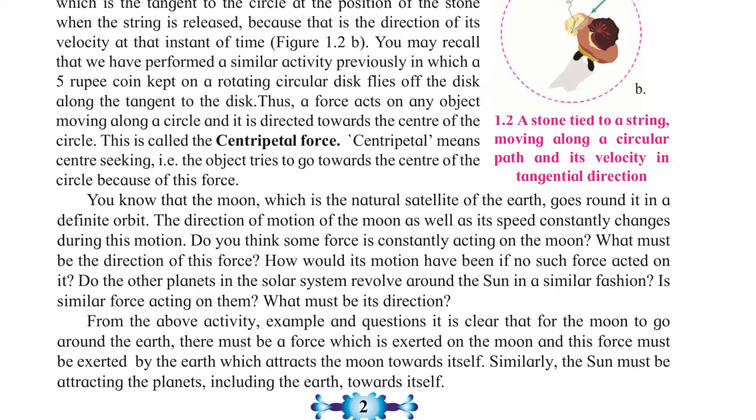From this activity and questions, it is clear that for the moon to go around the earth, there must be a force which is exerted on the moon, and this force must be exerted by the earth which attracts the moon towards itself. Similarly, the sun must be attracting the planets, including earth, towards itself.